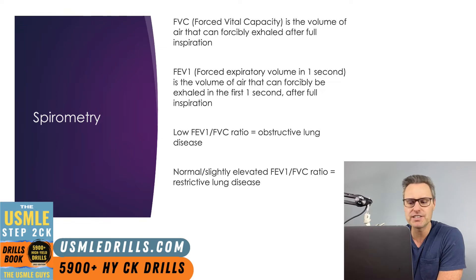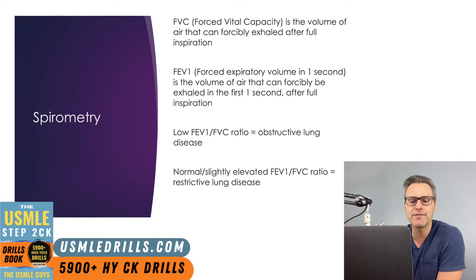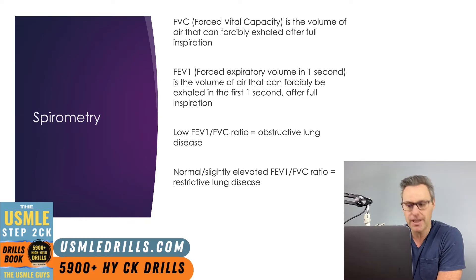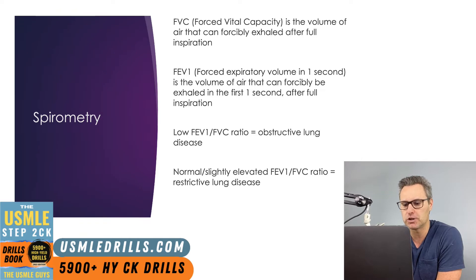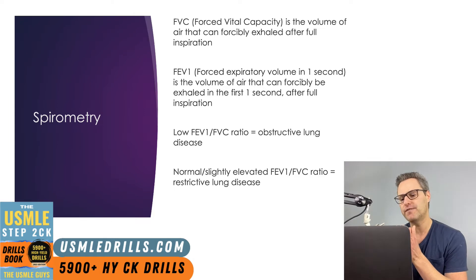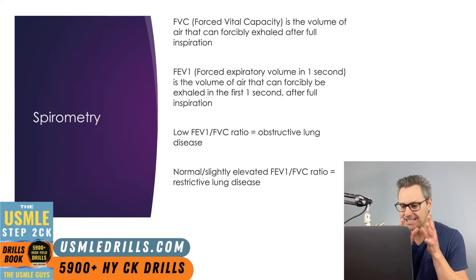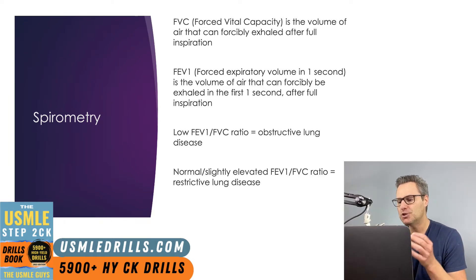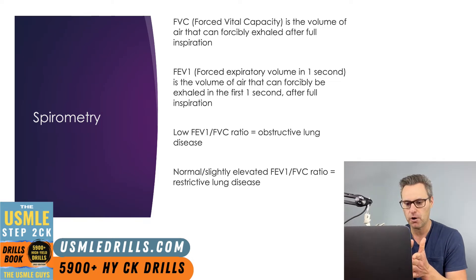The FEV1 to FVC ratio is a very common way to differentiate between obstructive and restrictive lung disease, and you'll of course remember this from those step one charts and pulmonary information. In obstructive diseases, you have a low FEV1 to FVC ratio because the FEV1 is reduced due to the increased airway resistance to expiratory flow.